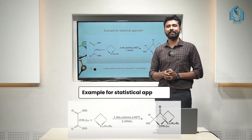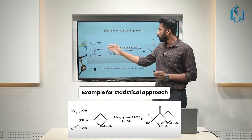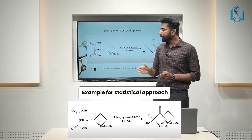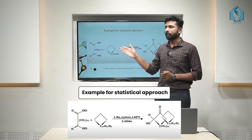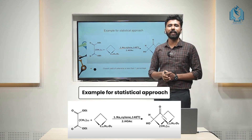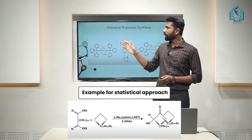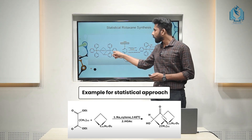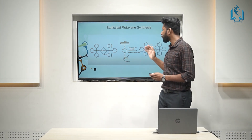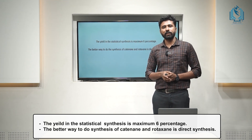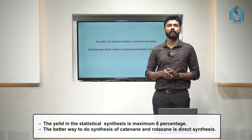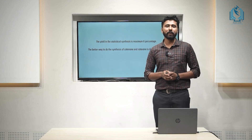Now, we could take an example for the statistical approach for the preparation of catenane. The first molecule is a diester and the second molecule is a macrocyclic ring containing 34 carbon atoms. By giving suitable reaction conditions, this molecule undergoes cyclization and forms 2-catenane. For statistical rotaxane synthesis, you could see that the two ends are bonded with a bulky group, leading to the formation of rotaxane. The problem with the statistical approach is that the yield is very low — approximately less than 1%. Compared to the statistical method, the direct method has a higher yield, up to 20%.